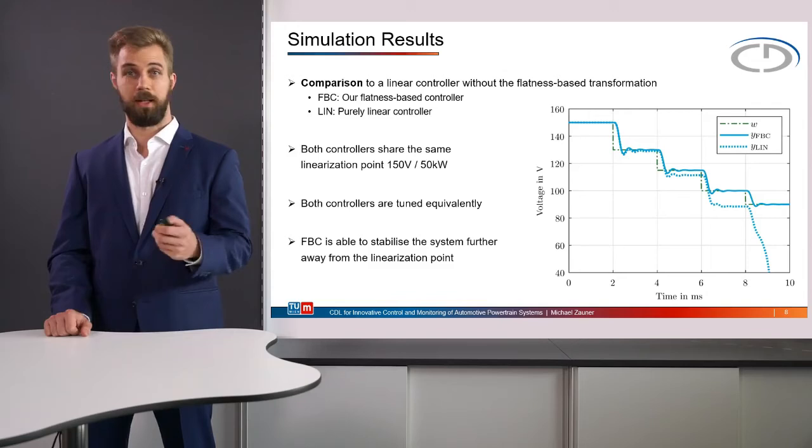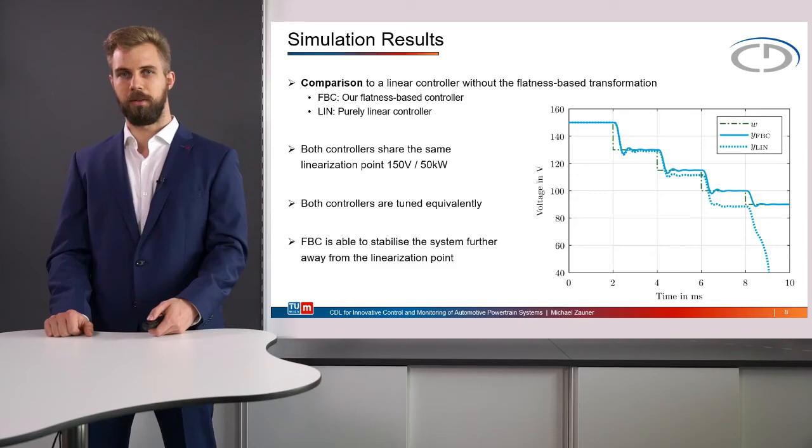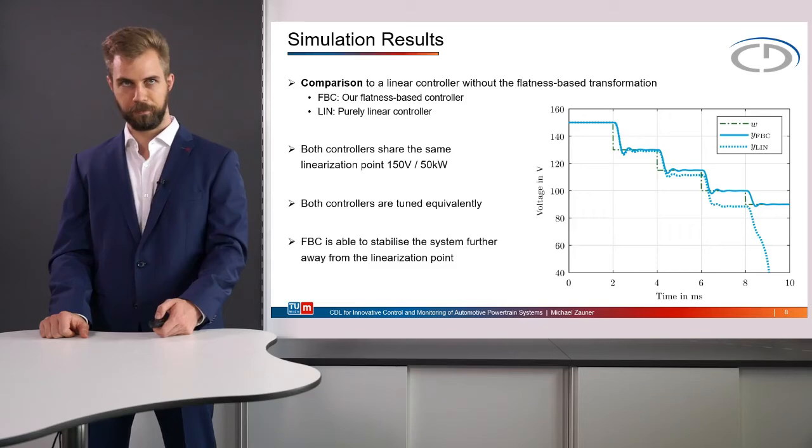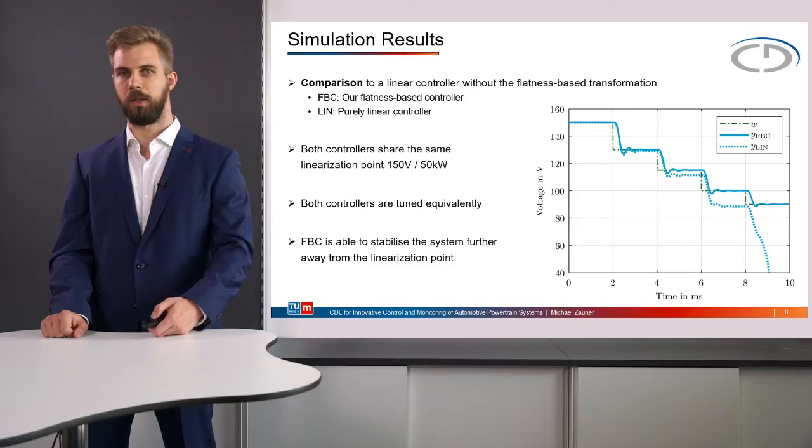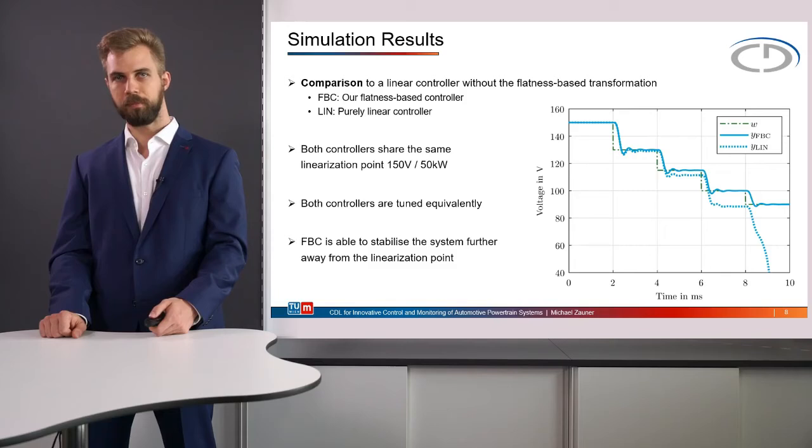Next, let us look at some simulation results. Here we can see a comparison between our flatness-based control concept and a naive purely linear control. The blue solid line on the graph on the right is the output voltage of the battery emulator with the flatness-based control concept and the dotted line is the output of a purely linear controller. Both controllers use the same linearization point at 150 volts and start also there at time step 0.